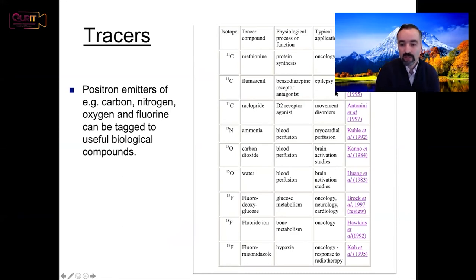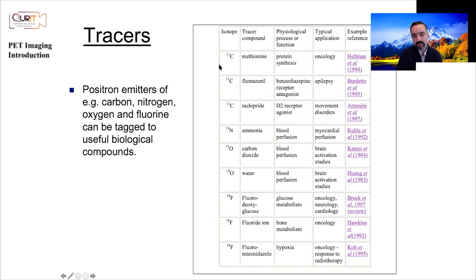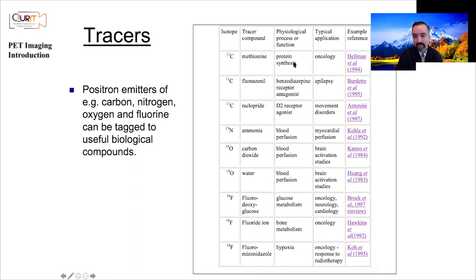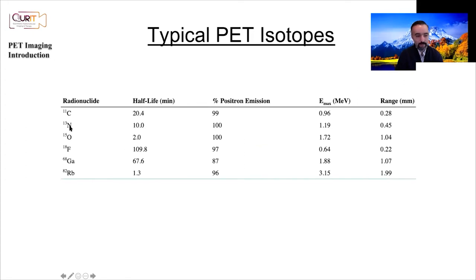Just some examples of many different applications. We have four examples of isotopes: carbon-11, nitrogen-13, oxygen-15, and fluorine-18. Many different molecules can be designed and tagged with these isotopes, targeting different processes and molecular phenomena, finding applications in many different areas. There are even more isotopes — also gallium-68 and rubidium-82. You can see examples of their half-lives — for routine clinical applications, having half-lives that are way too short makes controlling the clinical environment more difficult.